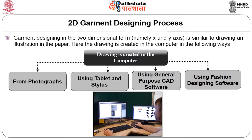Next, we are going to learn about the different methods of creating 2D garment designs. When I say 2D garment designing, it is similar to drawing and illustration on paper — drawn and viewed in two axes, namely the x-axis and y-axis. The designs can be created using photographs, using a tablet and stylus, using general purpose CAD software, or using fashion designing software.